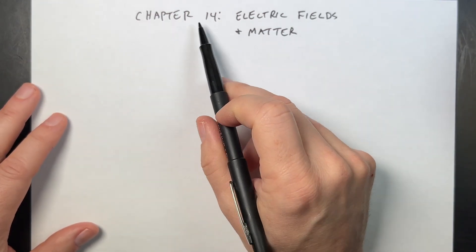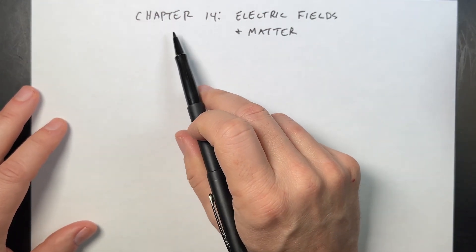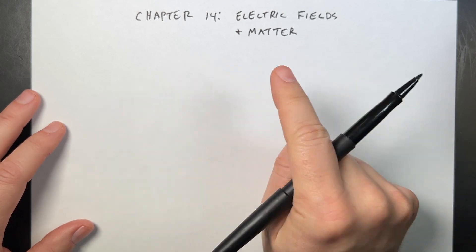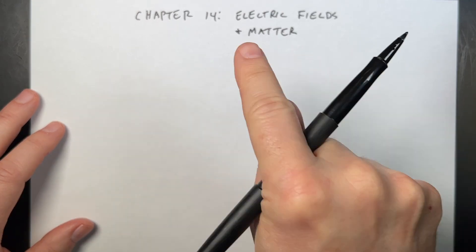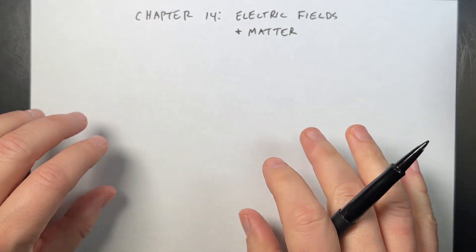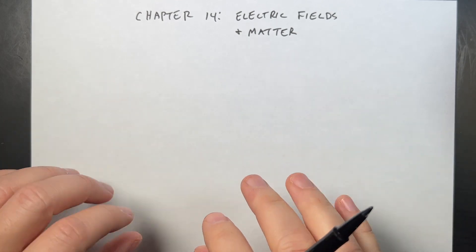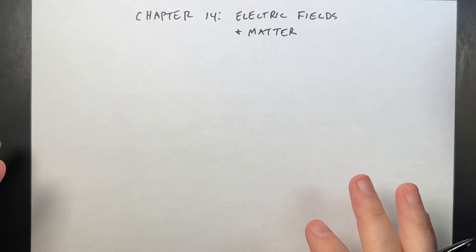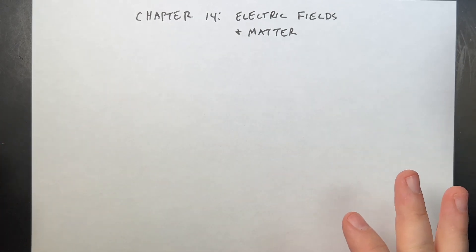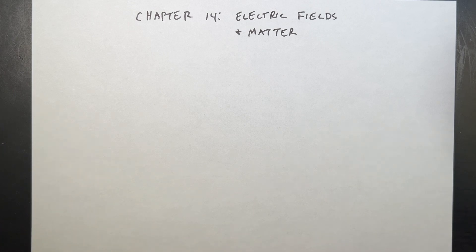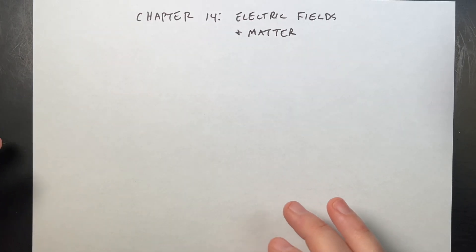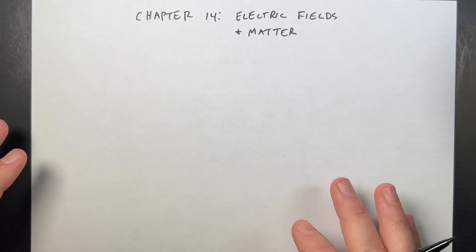I am continuing my summary of chapters from Matter and Interactions. This is chapter 14, electric fields and matter. Just a reminder, I'm going over just the very basic ideas in the chapter. I'm not really solving any problems. This should not replace you reading the book. The book is pretty good.